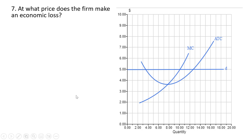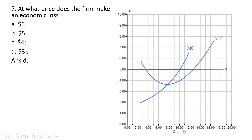Question 7: at what price does the firm make an economic loss? The firm will make an economic loss any time the price is less than the lowest point on the average total cost curve. The correct answer is $3. At a price of $3, average total cost would exceed $3 and the firm would make an economic loss. Anytime the demand curve is below that lowest point, the firm makes an economic loss.